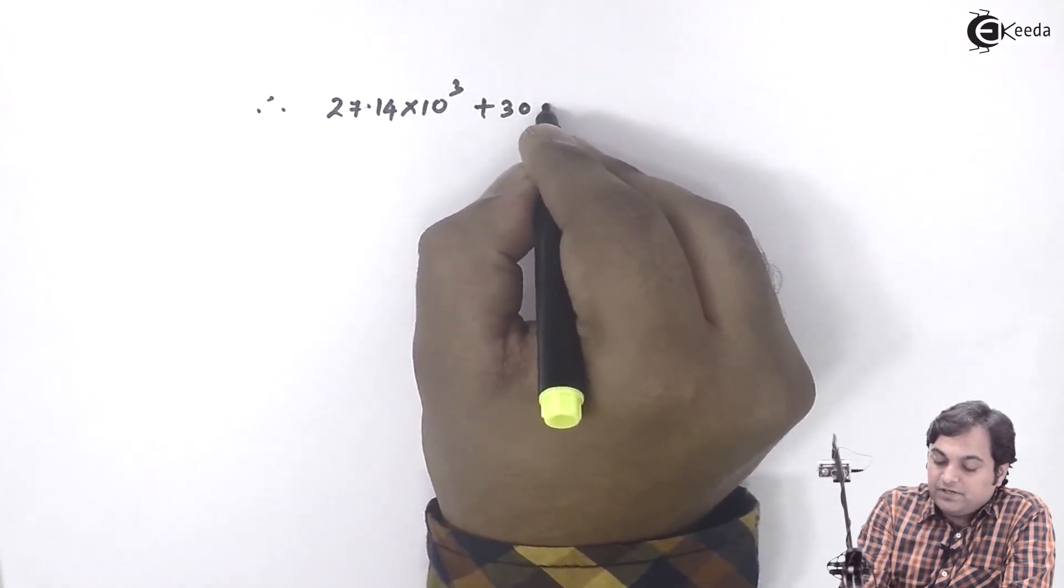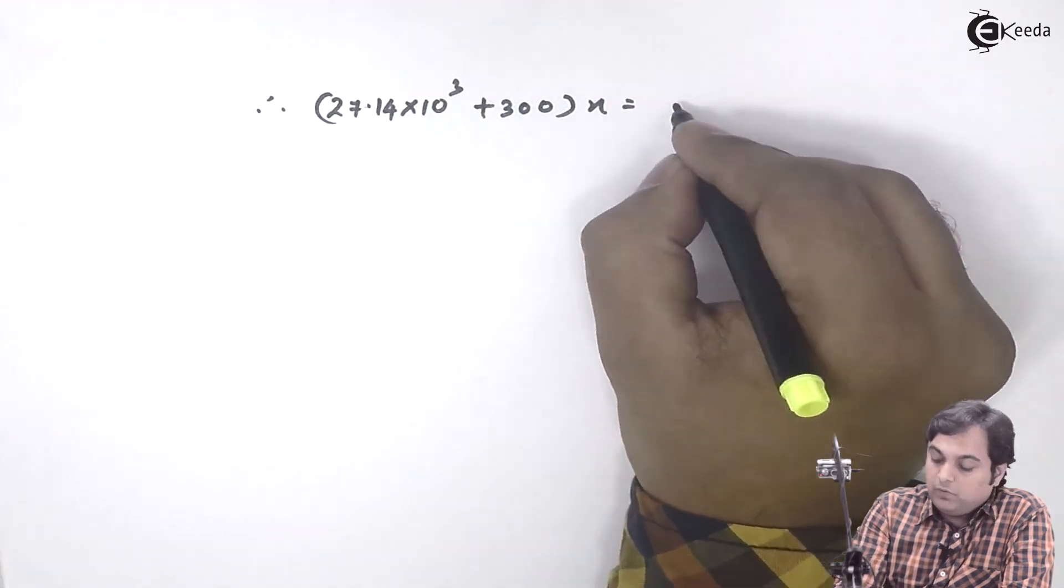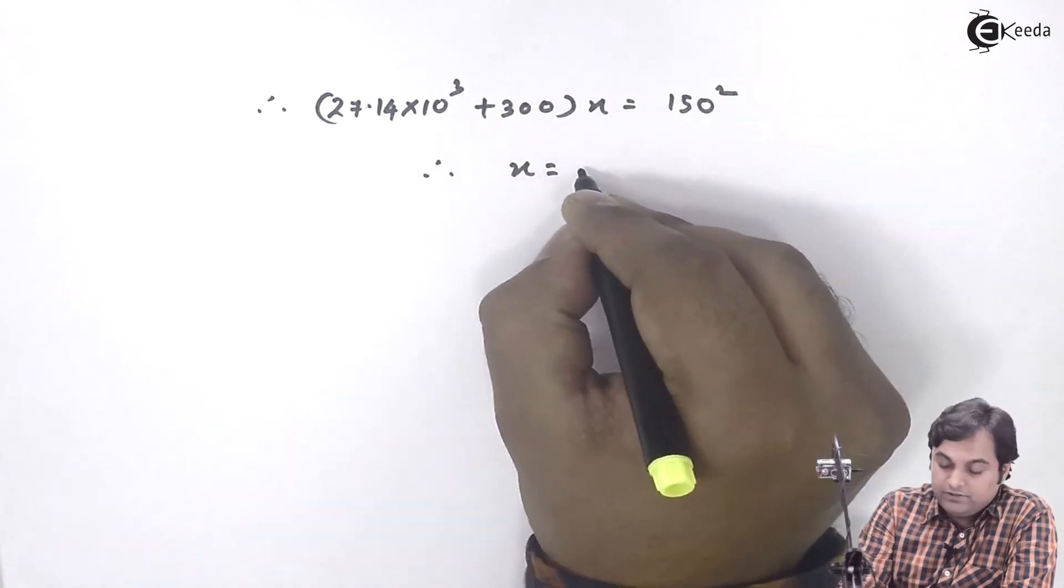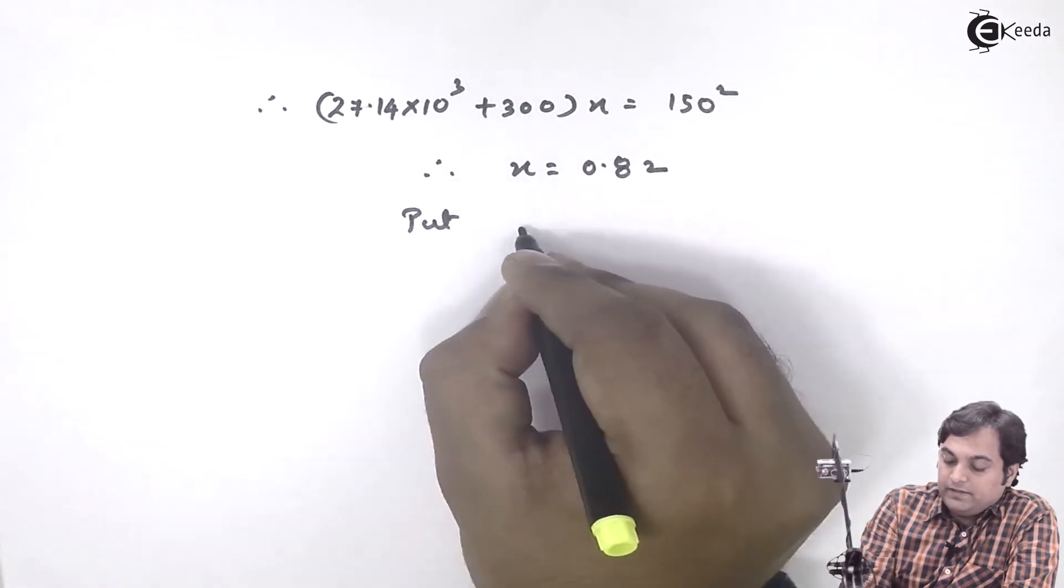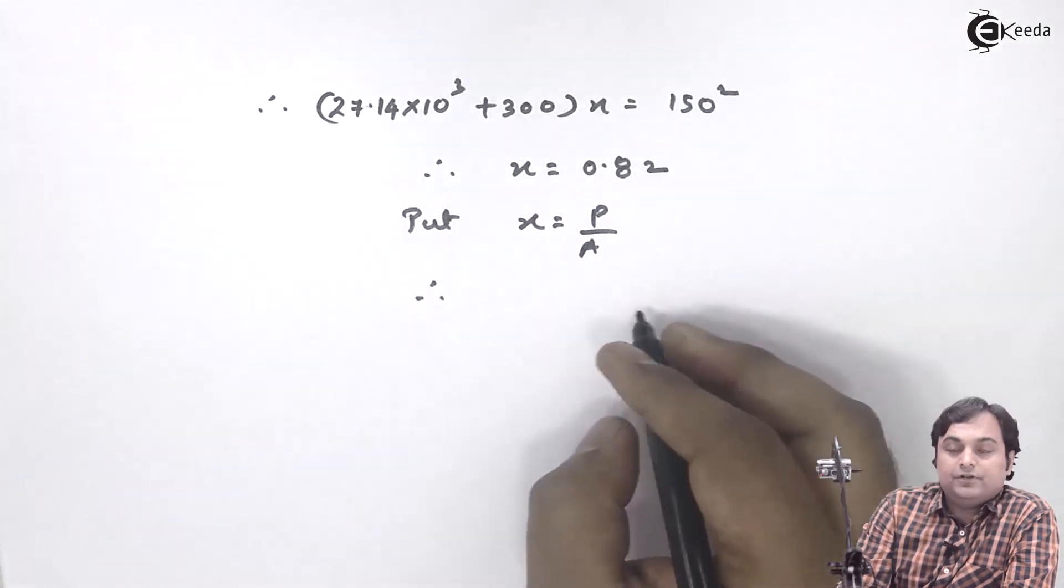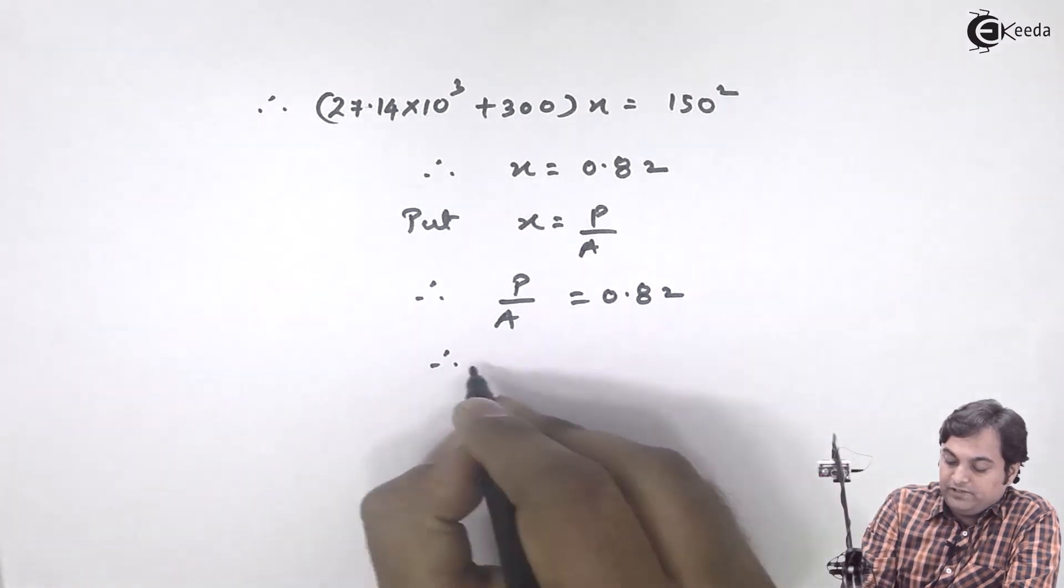+ 300X = 150². Hence, X value will be 0.82. I will say that since X = P/A, therefore P/A = 0.82, and finally